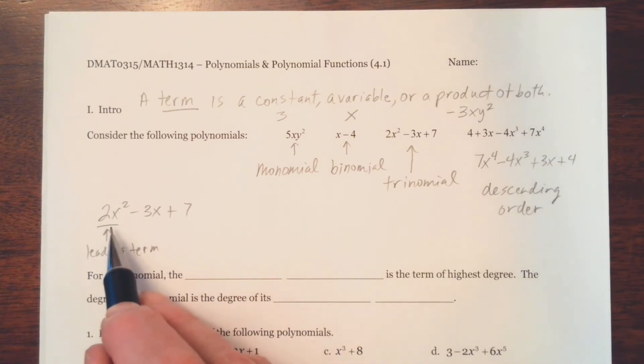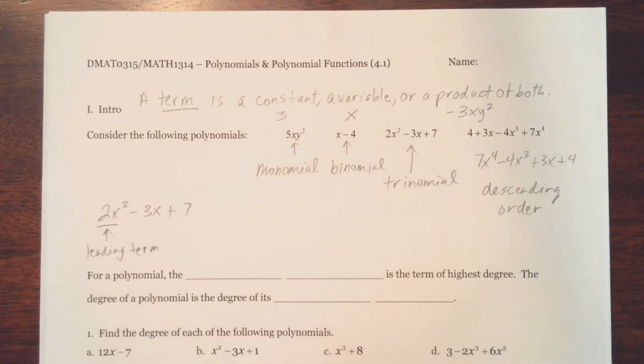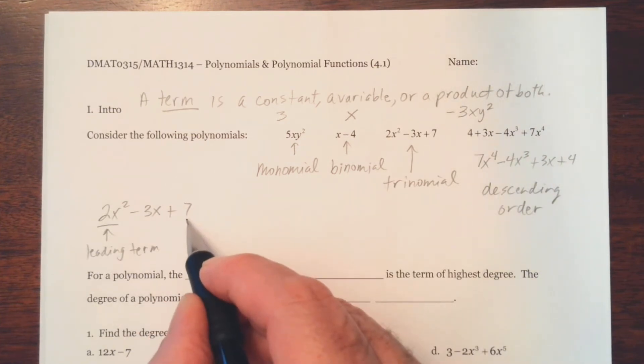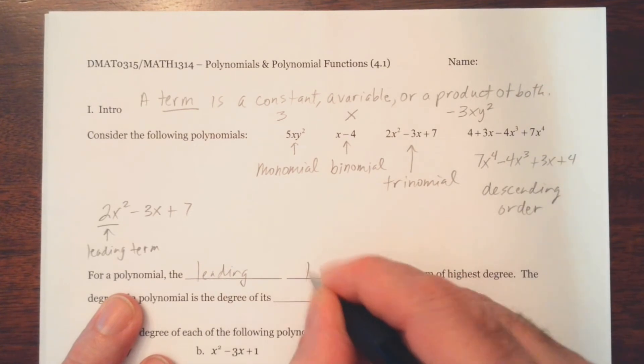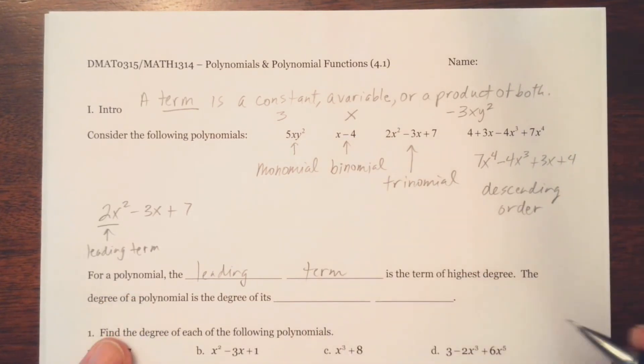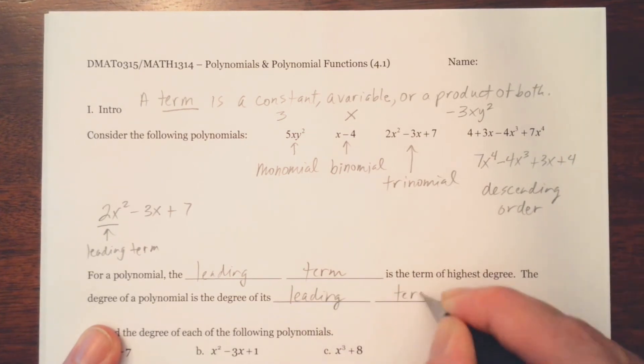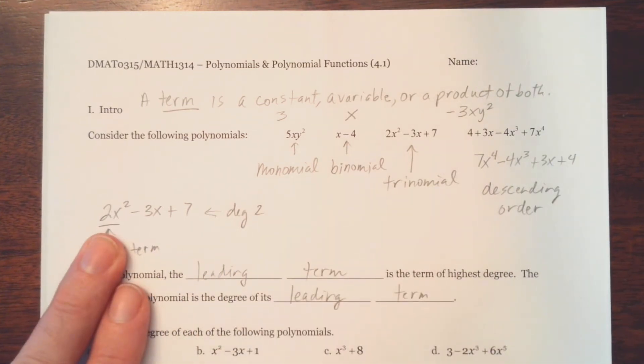Notice this, so we would say this term has a degree of 2. Notice the degree is just the exponent of the term. So this term, this x is to the first power. But we don't write the 1. And so this would be a first degree term. And then finally constants have a degree of 0. So for a polynomial, the leading term is the term of highest degree. The degree of a polynomial is the degree of its leading term. So this trinomial has a degree of 2 because its leading term has a degree of 2.